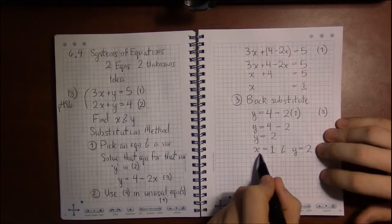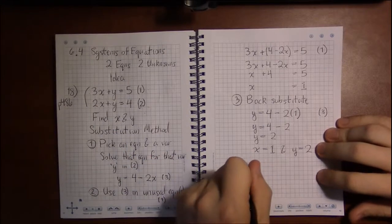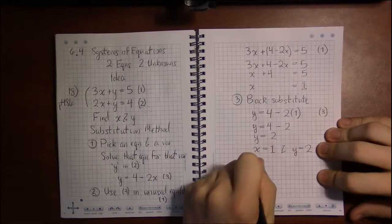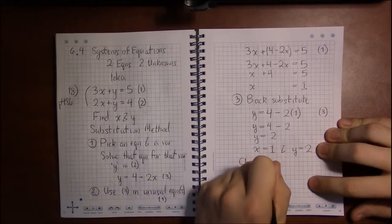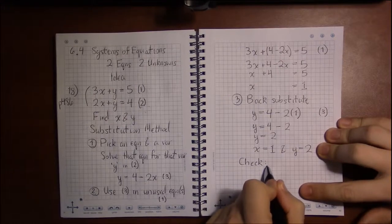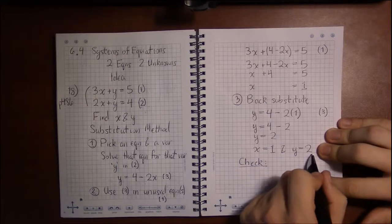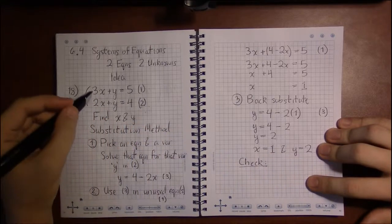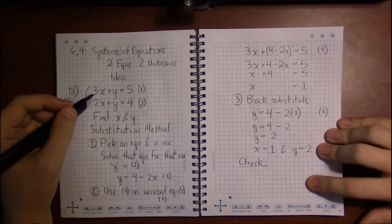Now, what did I mean by these two things have to be true simultaneously? Well, perhaps it will be more clear if I demonstrate how to check your answer. To check your answer, you're going to plug x equals one and y equals two into both equations. And we want both equations to be true.